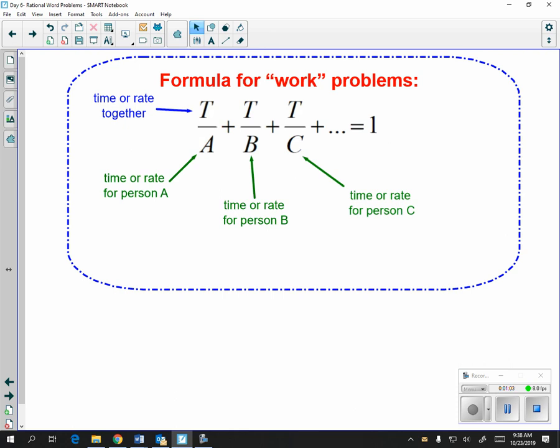Now you have as many fractions as people that you have. There's going to be one fraction per person that you have. So basically you have together over individual for each fraction. And what equals one is how many jobs you're trying to complete. If you're building one house, you equal one. If you're building two houses, you equal two.